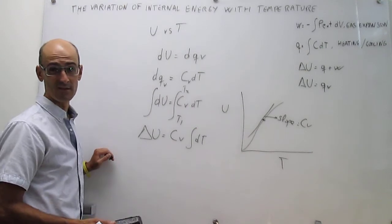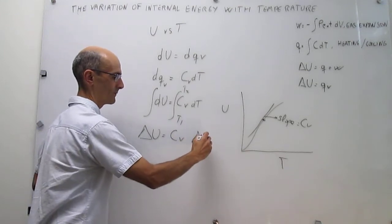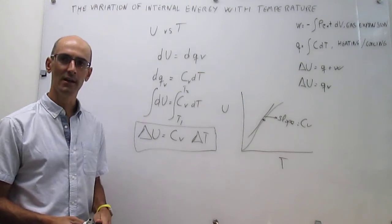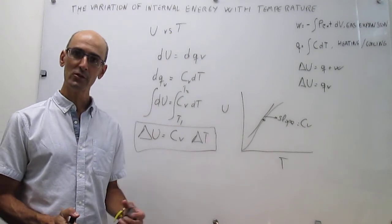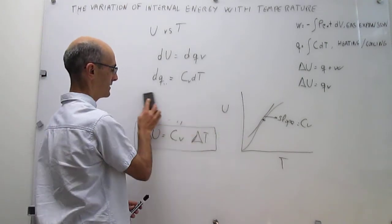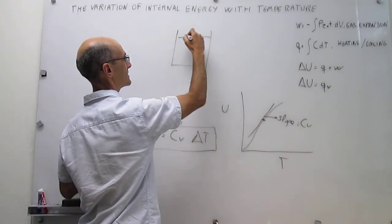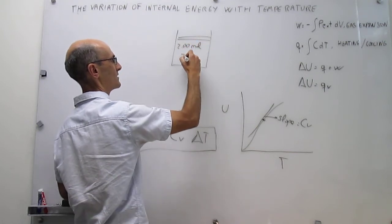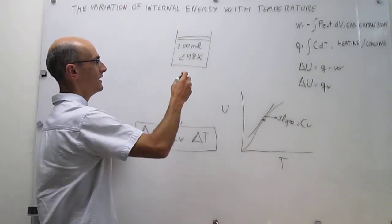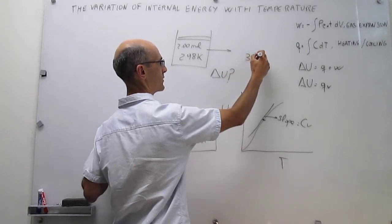If C_V is constant — which will be the case in many problems — then the integral of dT is simply ΔT, giving the simple expression ΔU = C_V·ΔT for the dependence of internal energy on temperature. To illustrate this equation, we will do a numerical example involving an ideal gas in some container. We have two moles of ideal gas at an initial temperature of 298 Kelvin. We do not need to know the volume or pressure, just the initial temperature. We will calculate the change in internal energy when the temperature is elevated to 310 Kelvin.